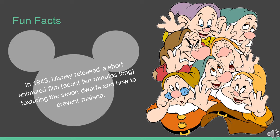In 1943, Disney released a short animated film about 10 minutes long, featuring the seven dwarves and how to prevent malaria. The video starts with the seven dwarves watching a film that shows the transmission of malaria. The seven dwarves then go on a mission to destroy the causes of malaria by altering the environment to kill the mosquitoes and prevent malaria from being transmitted. Though the film reflects the limitations of 1943 knowledge, it's a notable early public health effort.